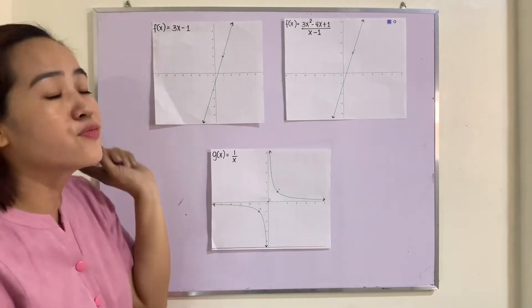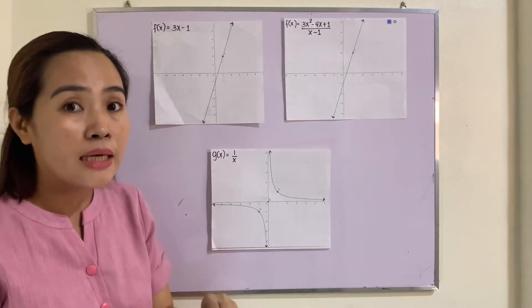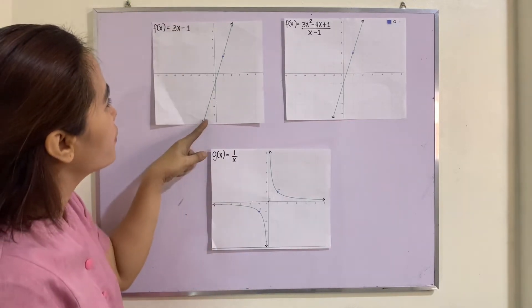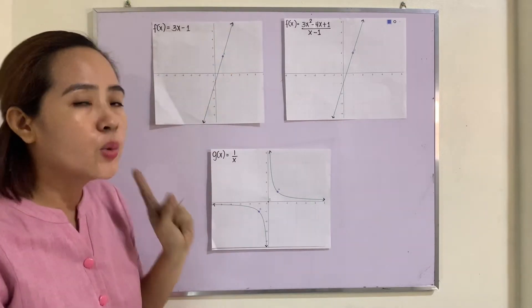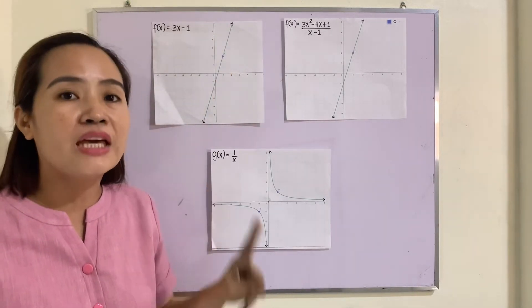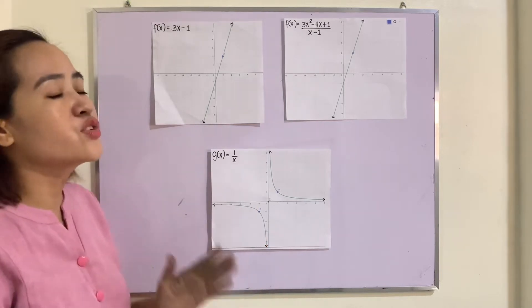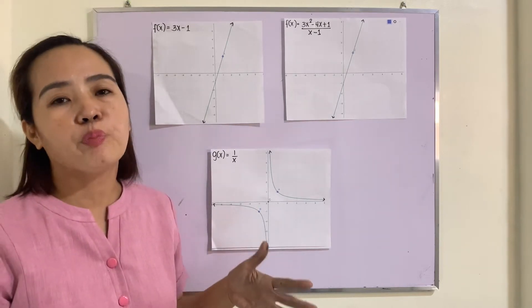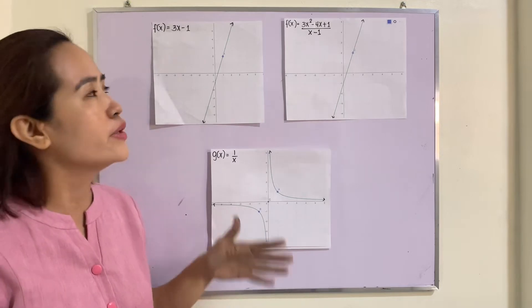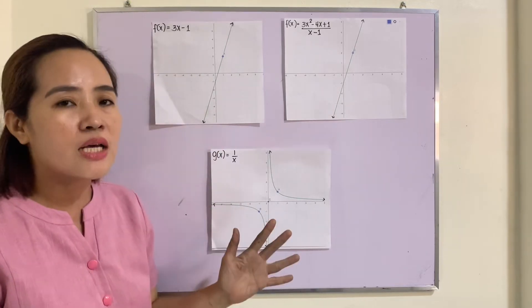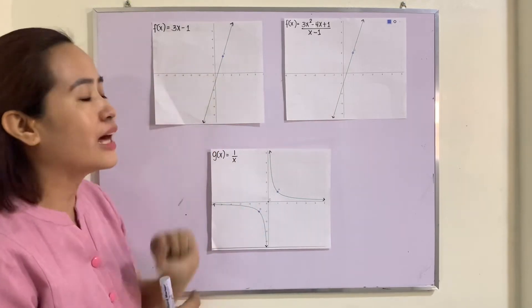Remember that f(x) is equal to y. So if we trace this one, the graph of this, we can do it without lifting our pen. If you can trace it without lifting your pen, then therefore that function is continuous at that point, which is x = 1.